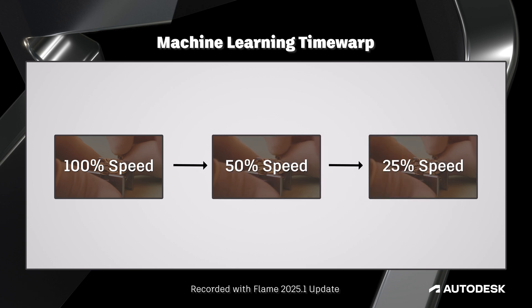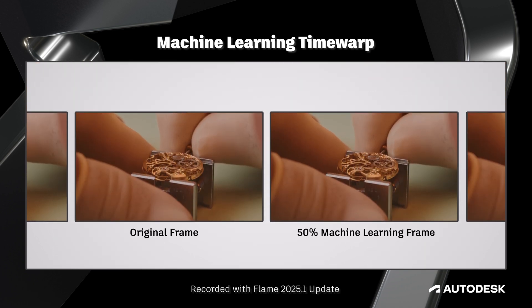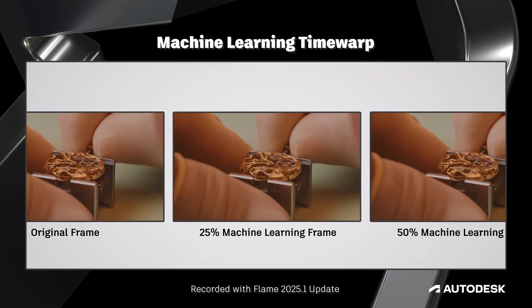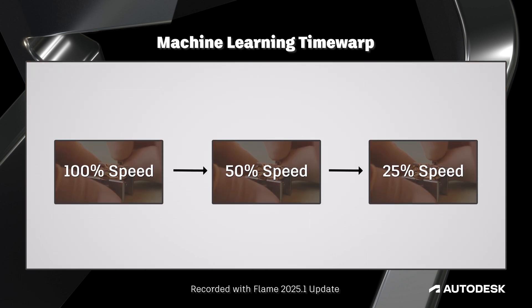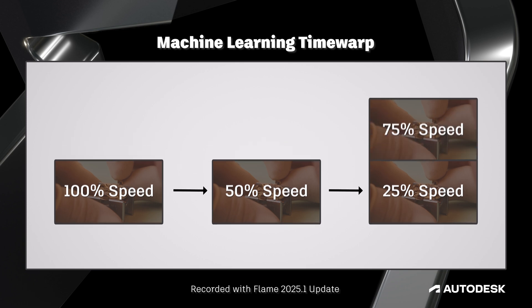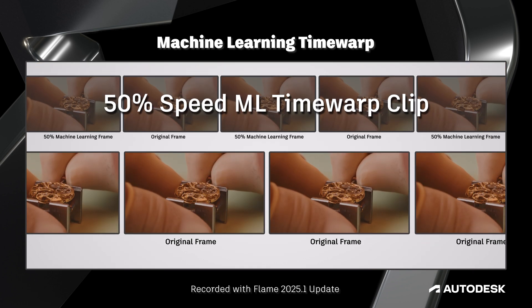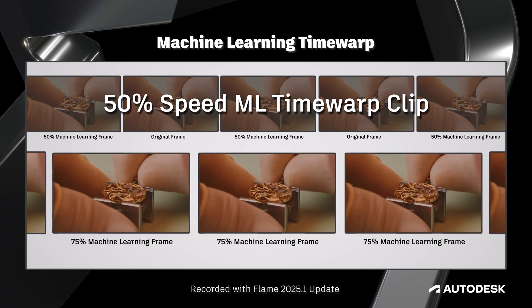But if we're looking to do a 25% Time Warp, for example, then the 50% speed clip serves as the new reference point. The algorithm performs an additional round of interpolation starting from the 50% speed clip, generating frames that are halfway between each frame of the 50% speed clip. This process halves the speed again, getting us to our 25% Time Warp. If we needed to go the other direction — say a 75% speed clip — the algorithm looks at the 50% speed clip and interpolates frames positioned halfway between the 50% speed frames and the original 100% speed frames.